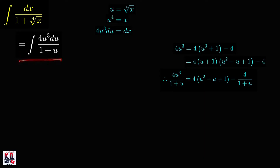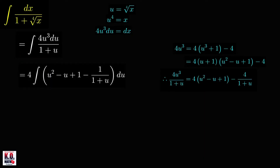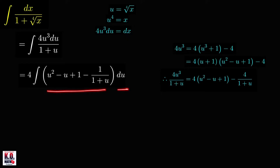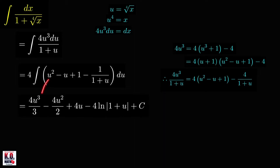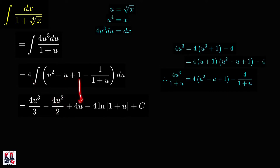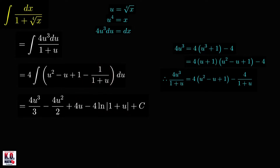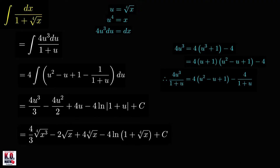So this integral can now be written by factoring out the 4, giving us 4 times the integral of this expression du. Using basic integration formulas: antiderivative of u squared is u cubed over 3 times 4, antiderivative of u is u squared over 2 times 4, antiderivative of 1 is u times 4, and antiderivative of 1 over 1 plus u is ln of absolute value of 1 plus u, plus c. We can then use our substitution equation to put u back in terms of x, giving us the final expression.